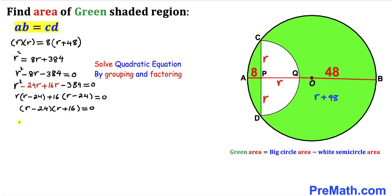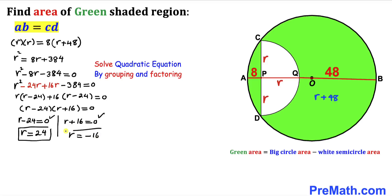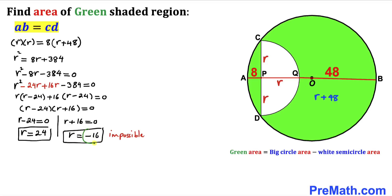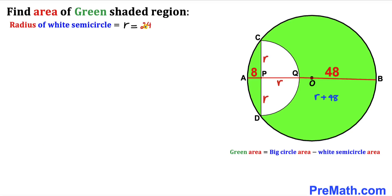Separating the factors: r minus 24 equals 0 gives r equals positive 24, and r plus 16 equals 0 gives r equals negative 16. Since distance cannot be negative, we reject r equals negative 16 and accept r equals 24. So the radius of the white semicircle is 24 units.